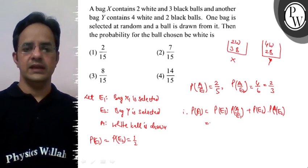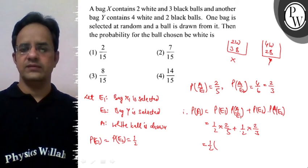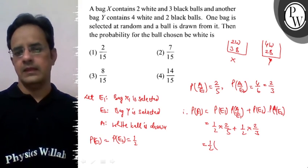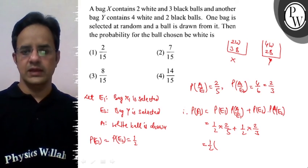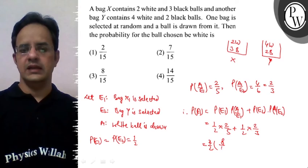Values ko substitute karte hain. The probability of E1 and E2 is 1 by 2, so it is half. A by E1 it is 2 by 5. Then plus half multiplied with 2 by 3. So which is equal to, take half common, then we have 2 by 5 plus 2 by 3. So it will be 8 upon 15.